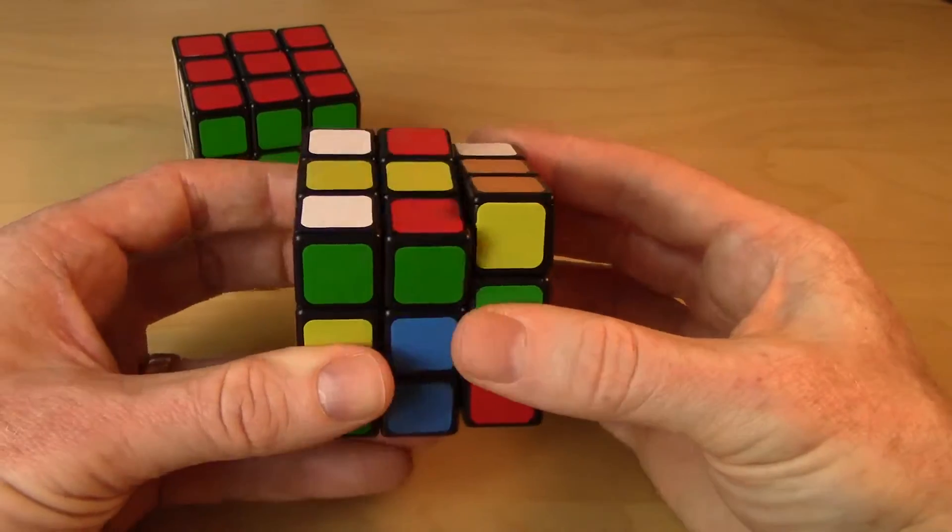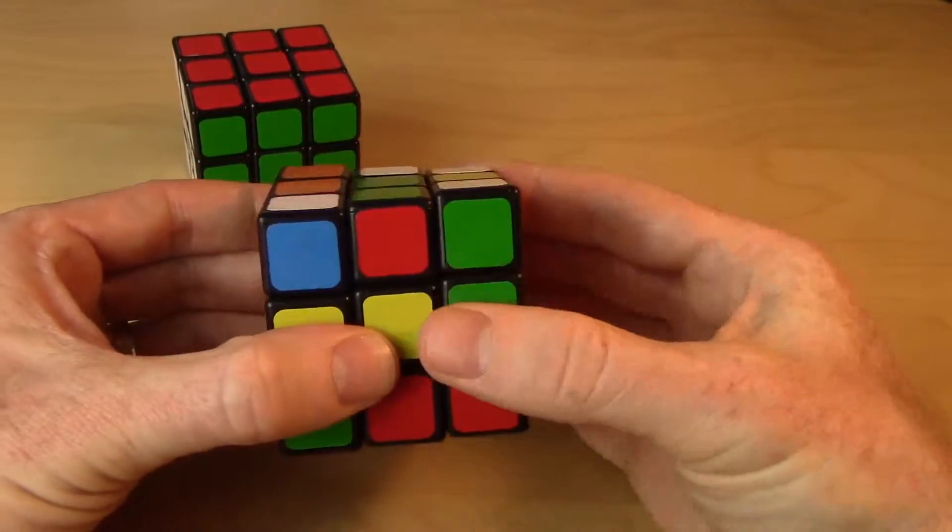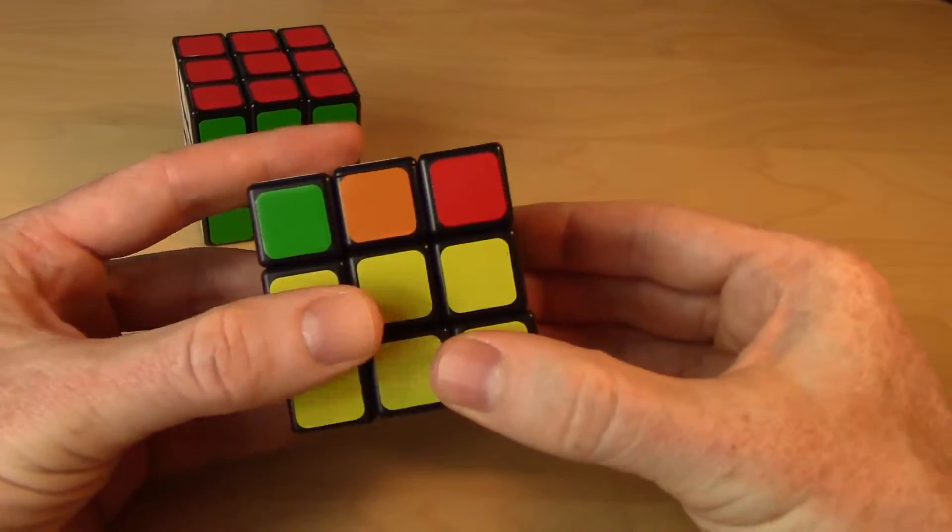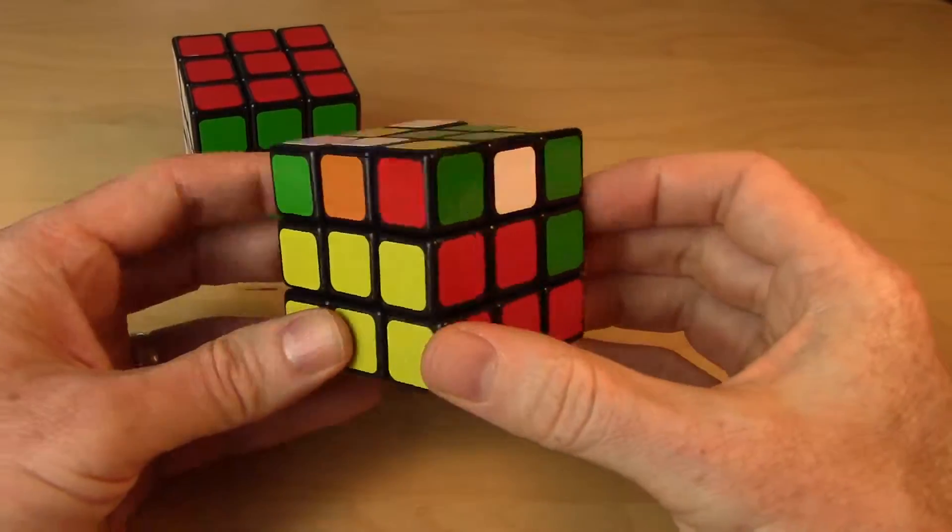So middle slice, double tap, middle slice, double tap. It's now down here, and then restore it. And now that one's placed. And we keep scanning around.